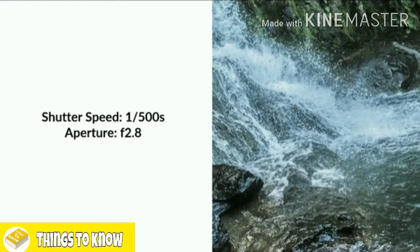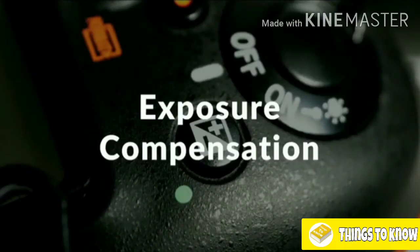What about instances where we're photographing in semi-auto modes and need to make a change to the exposure? Sometimes the camera is not always going to get it right. It is still possible to change exposure when photographing in semi-auto modes — program mode, shutter priority, aperture priority — by using exposure compensation. In fully auto mode we can't make any changes, but in these semi-auto modes we can use exposure compensation.